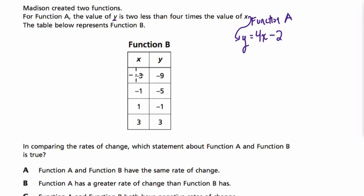And function B is in this table right here. So they give us a bunch of points or data values here. And they want to know, in comparing the rates of change, so I'm thinking rates of change, that's slope. In comparing the slopes, which statement about function A and function B is true?